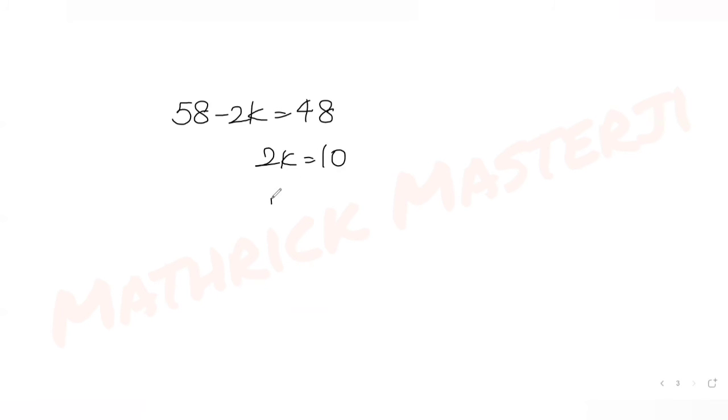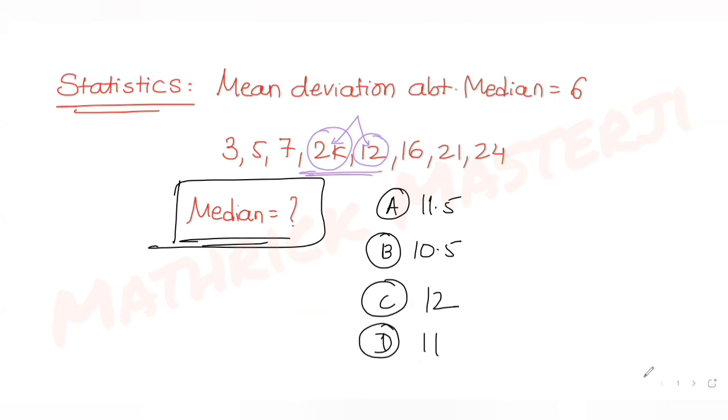From here, 58 - 2k = 48, so 2k = 10, k = 5. Once I get k = 5, this term becomes 2 × 5 = 10. So the median is (10 + 12) ÷ 2 = 11.